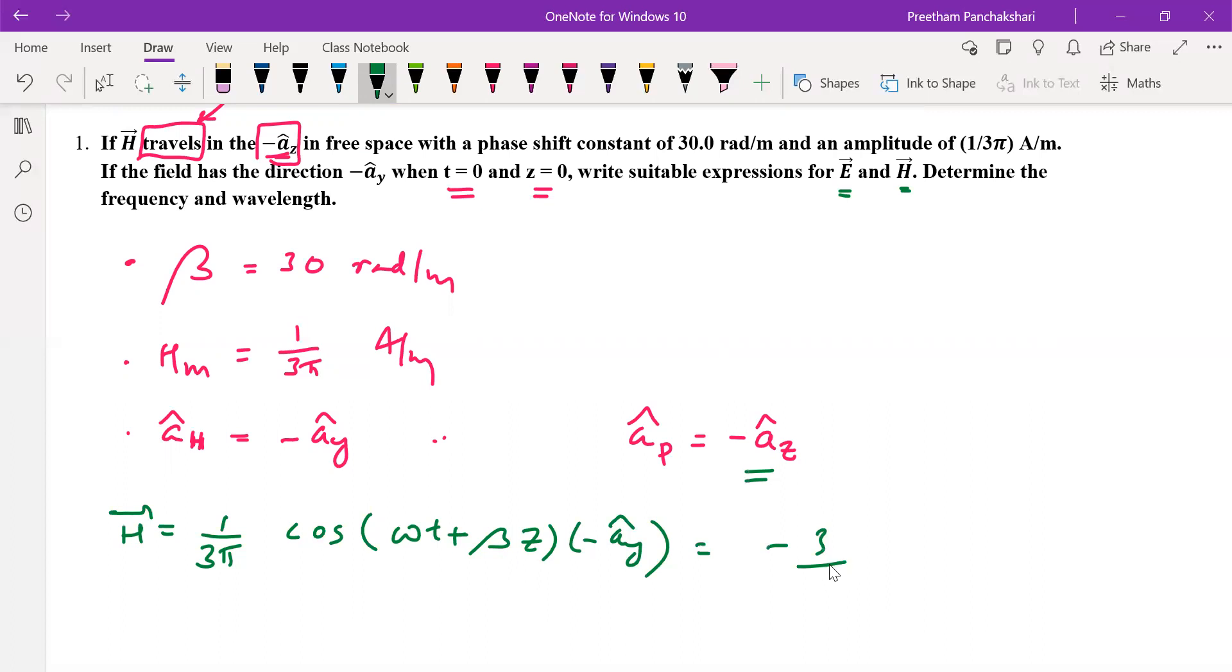So this forms the equation. So let us take this minus to amplitude. 1 divided by 3π cos omega value is not given. We'll try to find it later. 1 divided by 3π cos ω. But beta value is given here. That is 30 radians per meter to Ay cap. If you find omega and place it here, so this makes the complete waveform for H.